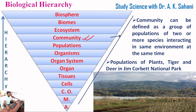The next level is community. Community can be defined as a group of populations of two or more species interacting in the same environment at the same time. For example, populations of plants, tigers, and deer in Jim Corbett National Park together form a community.